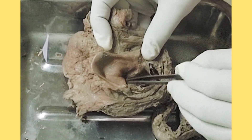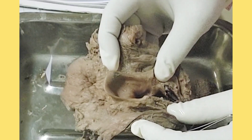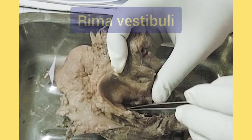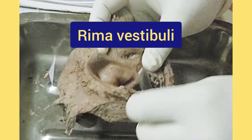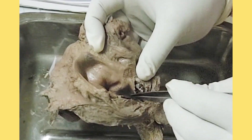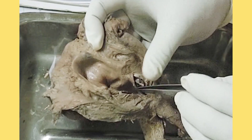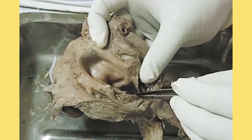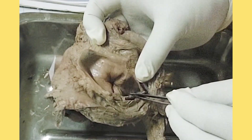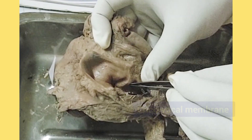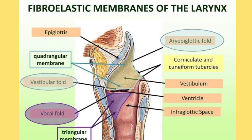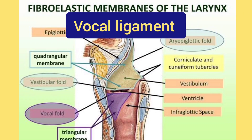The space or gap between these two vestibular folds is called the rima vestibuli. From the lower side, from the cricoid cartilage upwards, one fibroelastic membrane is also present. That membrane is called the crico-vocal membrane. The upper margin of this crico-vocal membrane is again thickened to form a ligament called the vocal ligament.